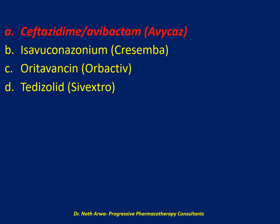Oritavancin, or Orbactiv, is a lipoglycopeptide antibacterial agent indicated in the treatment of adults with acute bacterial skin and skin structure infections caused by susceptible gram-positive microbes. It is administered intravenously only and has nothing to do with intra-abdominal infections. Isavuconazonium, or Cresemba, is an azole antifungal indicated in the treatment of invasive aspergillosis and invasive mucormycosis, administered both IV and orally, and has nothing to do with bacterial intra-abdominal infections.